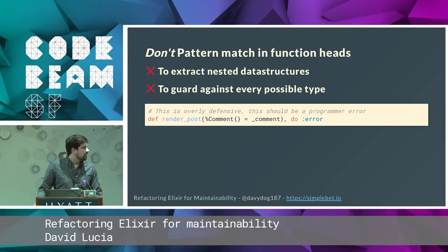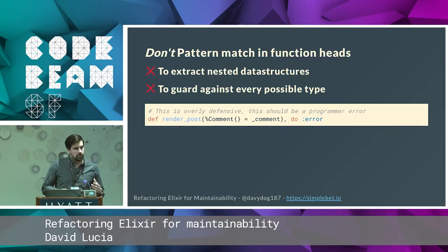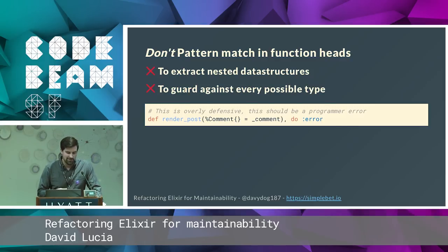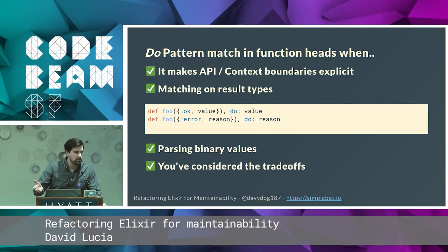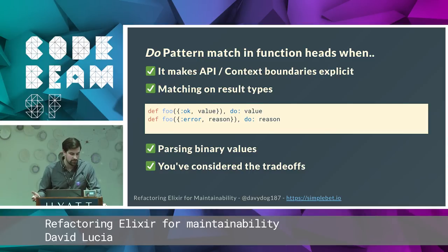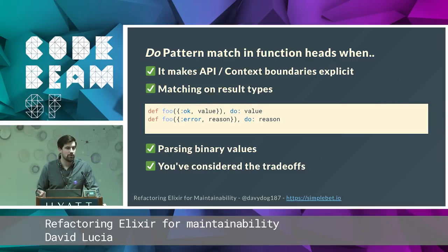What I found is: maybe don't pattern match to extract nested data structures, or to treat it like a type system and guard against every possible bad value. For example, a render post function should never take a comment — that should be obvious from its name. It's really easy as a beginner to write overly defensive code. Avoid that and let it fail in a different way; let the runtime catch it. Do pattern match when it makes sense to create an API layer that matches on a struct, when handling an API response and matching on the result type, or for parsing PNGs — a great example of when pattern matching is great. Maybe it's also okay when you're pulling out nested data structures for high-performance reasons, but at least you've considered the alternatives.